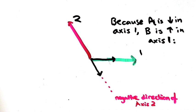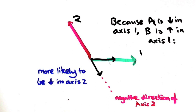What does this mean? It means that if you measure the spin in axis 2, it's either going to be up or down, but more likely to be down. So in this case, A and B are more likely than not going to have the same spin, and therefore the colours are likely to be the same.